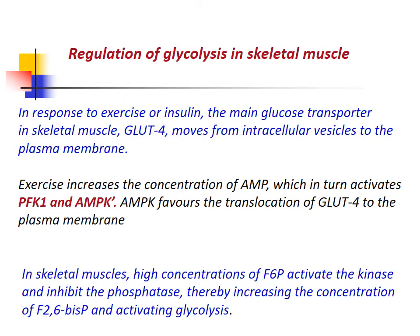In response to exercise or insulin, the main glucose transporter in skeletal muscle — glucose transporter 4 — moves from intracellular vesicles to the plasma membrane. Exercise increases the concentration of AMP, which activates PFK1 and AMP-dependent kinase. AMP-dependent kinase favors translocation of GLUT4 to the plasma membrane. In skeletal muscle, high concentrations of fructose-6-phosphate activate the kinase and inhibit the phosphatase, increasing fructose-2,6-bisphosphate concentration and activating glycolysis.